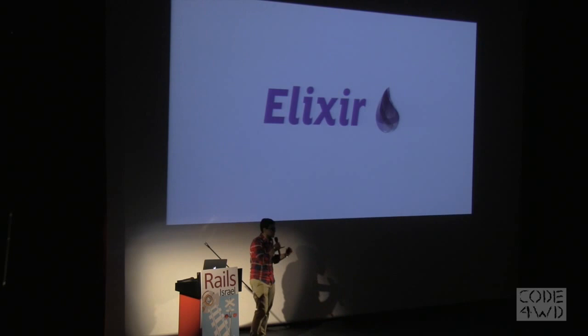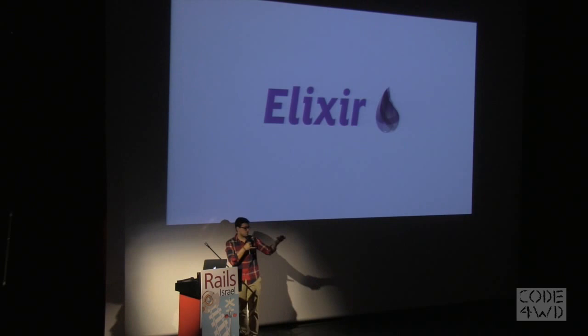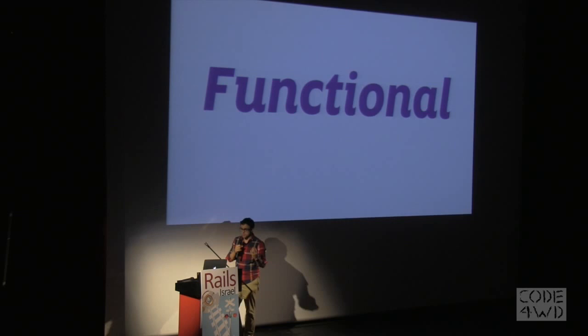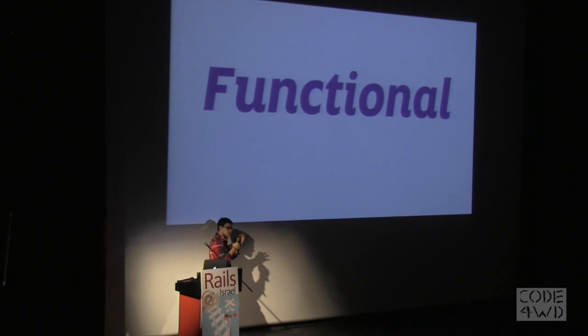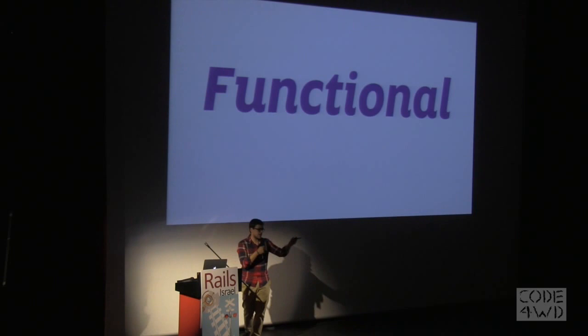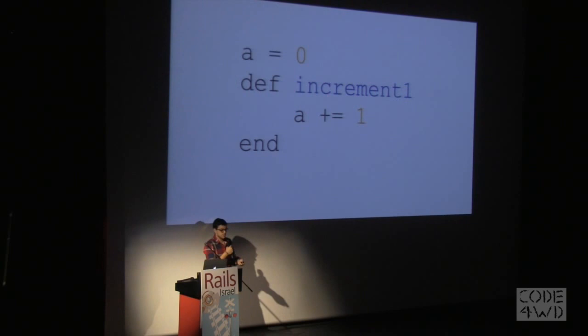Elixir enables you to do all this functional and concurrent stuff using the Erlang virtual machine and all these innovations from the last 30 years, in really simple syntax — something really similar to Ruby. But in order to accomplish parallelism, it has to be functional. A lot of people like to talk about first-class functions, tail-call optimization, map, reduce, or recursivity. But functional is something really simple: it can't update variables that are outside of that scope and can't depend on variables that are outside of that scope. Basically, you're not sharing memory.